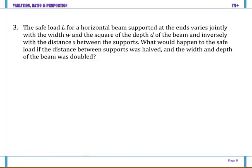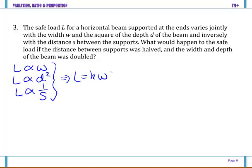Last example. The safe load for a horizontal beam supported at the ends varies jointly with the width, so L varies jointly with the width and the square of the depth. So L varies directly with the square of the depth of the beam and inversely with the distance s between the supports. So that will all combine to give L equals k w d squared all over s.